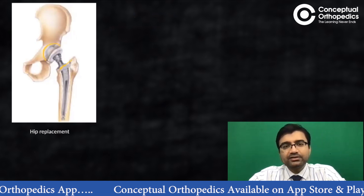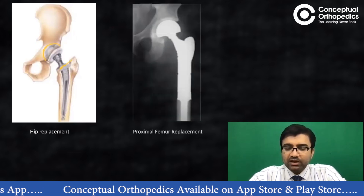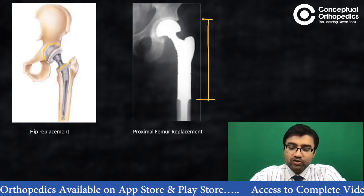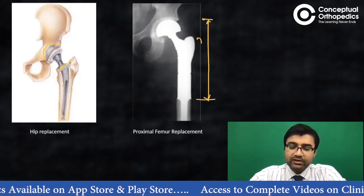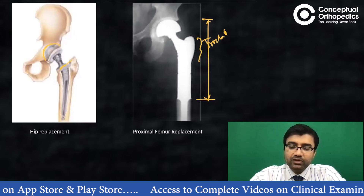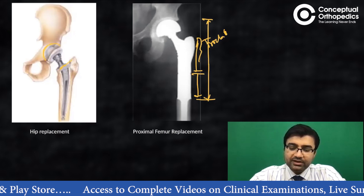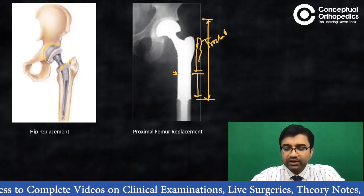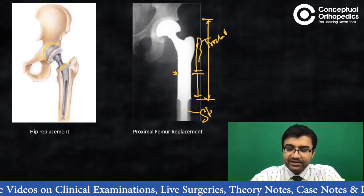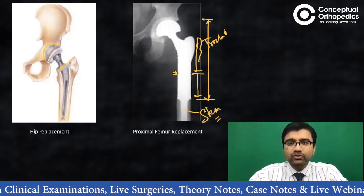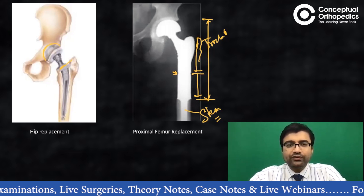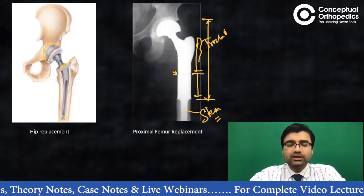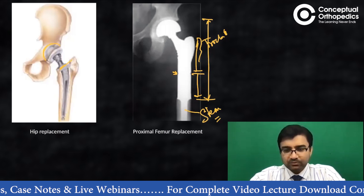Similarly, in a standard total hip replacement, you cut the femoral neck and augment the acetabulum with a cup. But in a tumor resection case, you resect everything — right from the trochanter, replaced by this prosthesis. You can see the tapering part where two components articulate, with the stem inside. This was a broad overview of the difference between conventional joint replacement implants and those used after large bony defects.